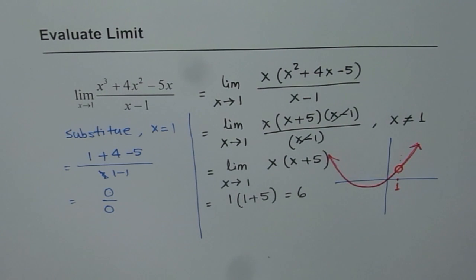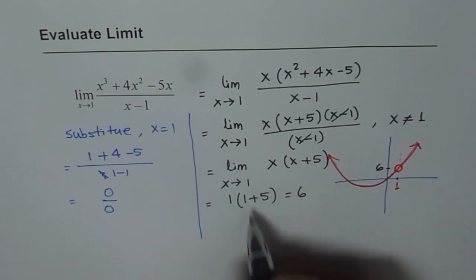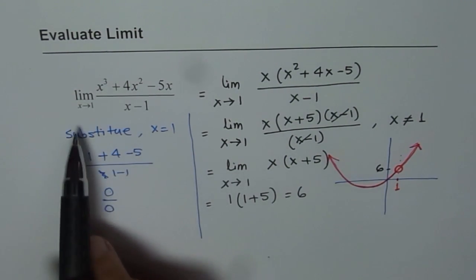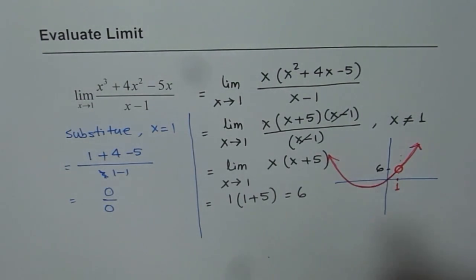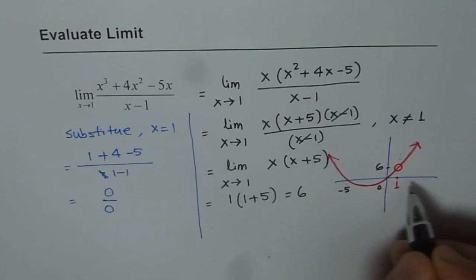Now, the value of the function approaches at this point is 6. So the limit of this function as x approaches 1 is 6. So this point is minus 5 for us and that's the origin. So that is how it is going to look like.